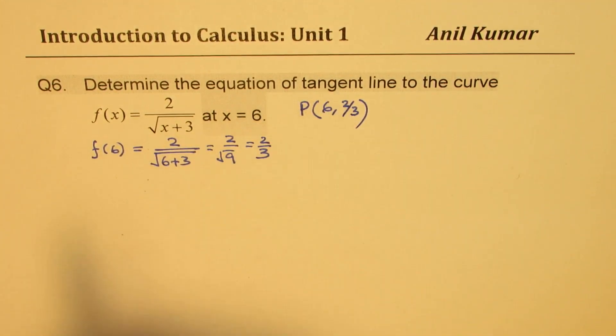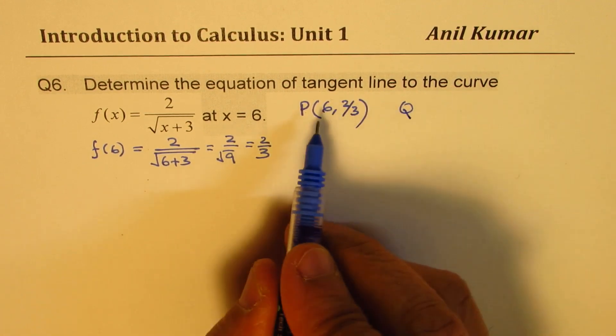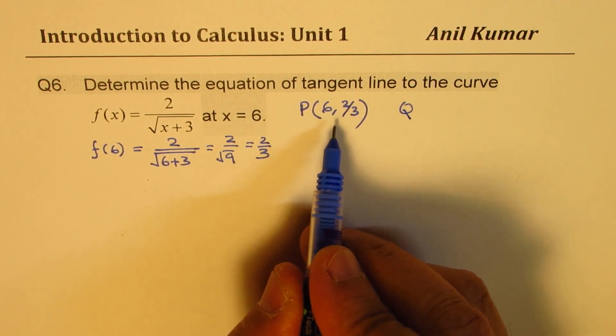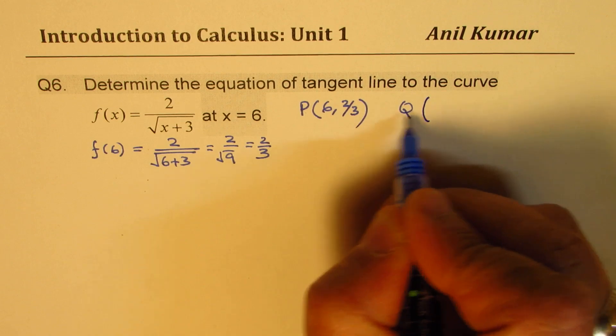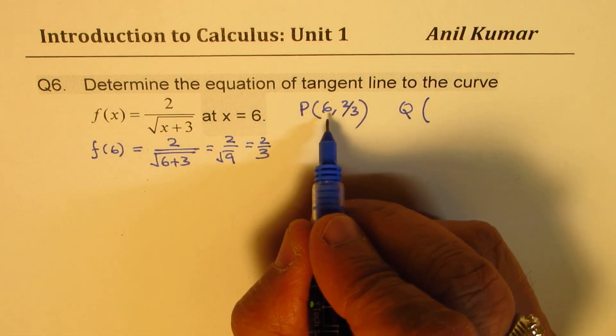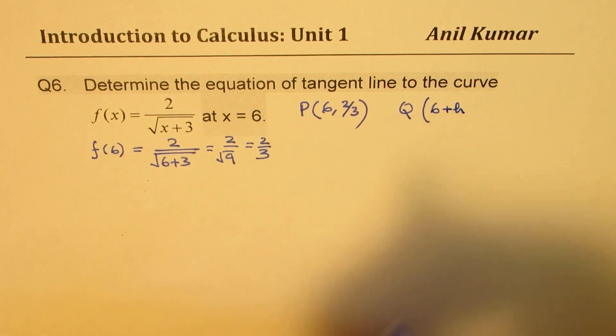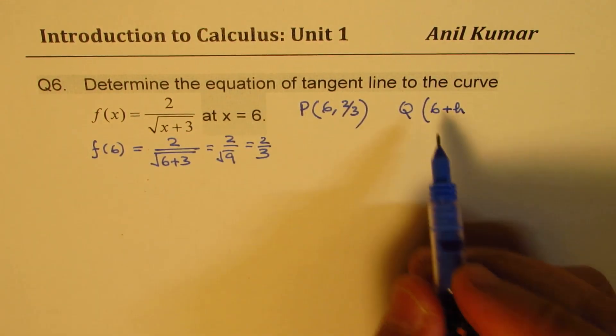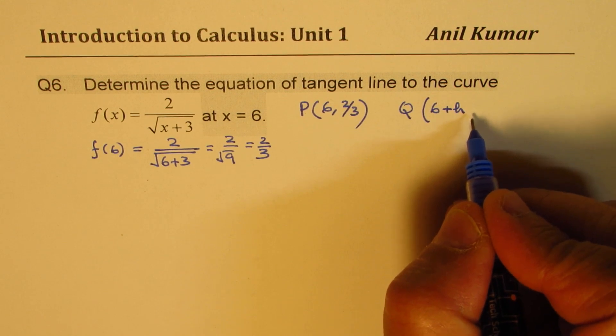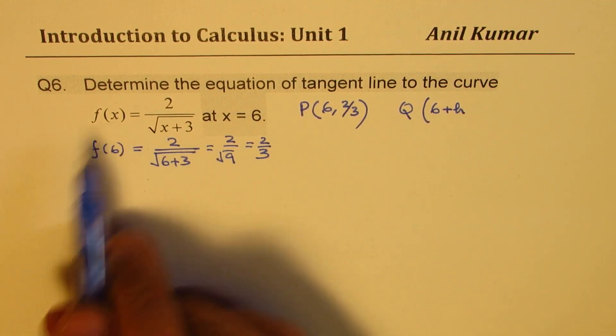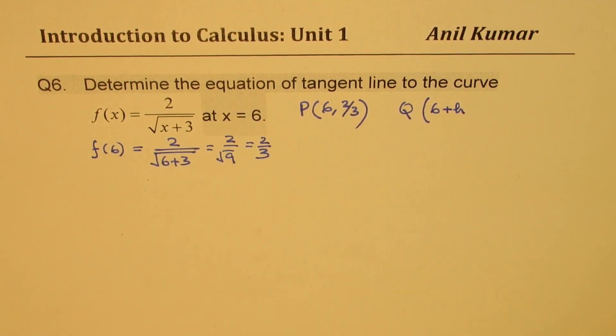To find tangent, we'll consider another point Q which is very close. Close means we'll take a value where the x value will be 6+h. You get the idea. Now if 6+h is the x value, then what is the y value? Let's calculate that also.